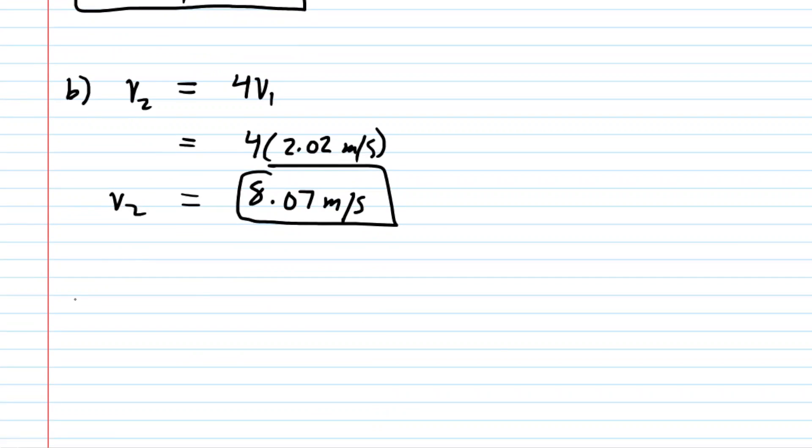And then part C wanted the volume flow rate, which is typically symbolized by Q. And you could solve that in two different ways. You could either take the cross-sectional area at the left end point of the pipe and multiply it by the velocity there, or you can take the cross-sectional area at the right point and multiply by its velocity there. We will choose the former approach. So remember that for area 1, you would have pi times radius 1 squared.